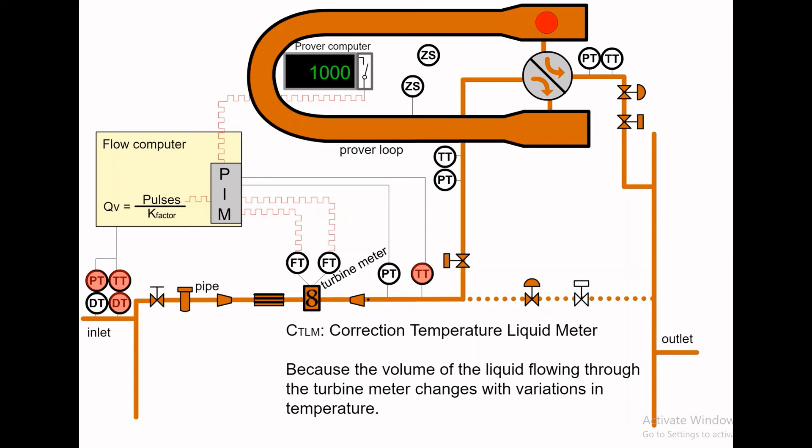CTLM, Correction Temperature Liquid Meter, makes the correction required because the volume of the liquid flowing through the turbine meter changes with variations in temperature.